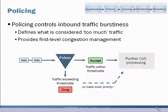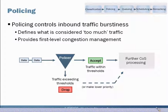Another way to think of policing is as a first stage of congestion management. There are congestion management elements within a Junos device further along in the CoS process, but this is that first chance — as traffic enters or arrives at your device — to really control traffic as a first stage of congestion management.